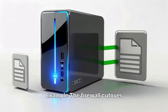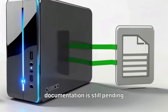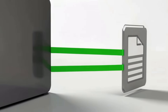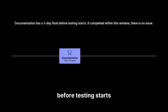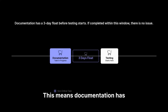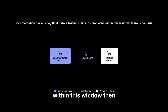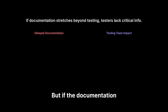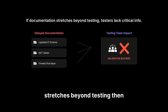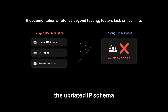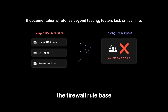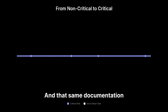For example, the firewall cutover is done, but the documentation is still pending and there are 3 days before testing starts. This means documentation has a float of 3 days — if it gets completed within this window, no issue. But if the documentation stretches beyond testing, then the testers won't have the updated IP schema, NAT tables, or even the firewall rule base. And that same documentation suddenly comes onto the critical path.